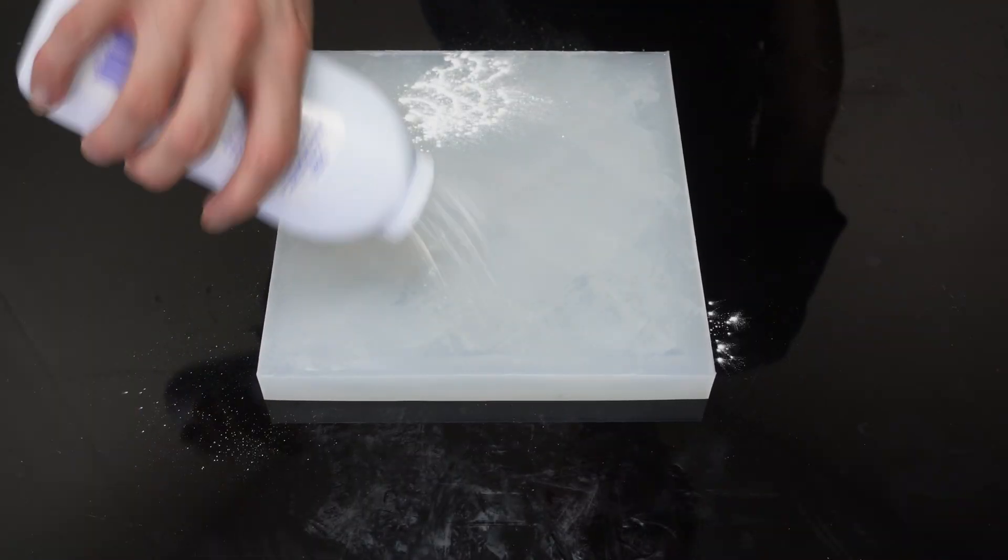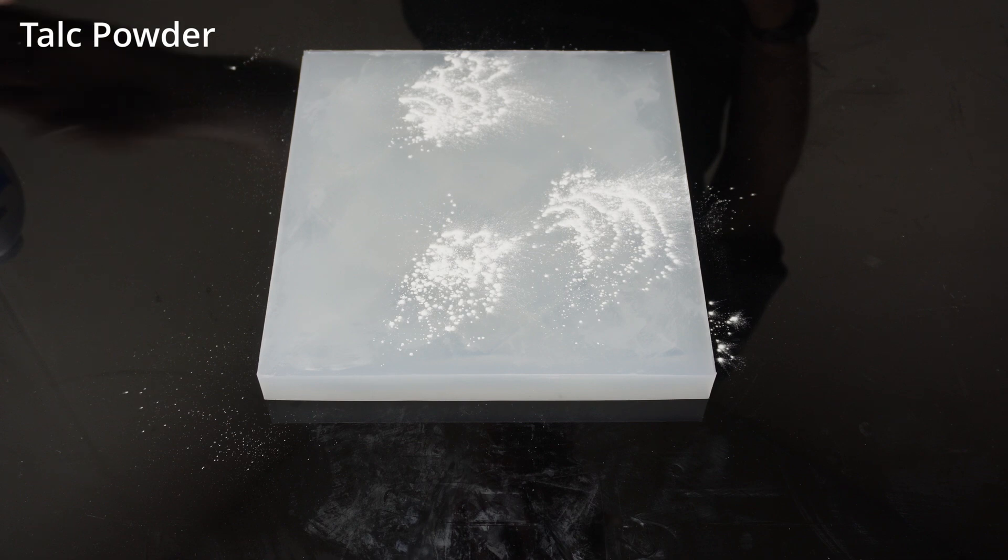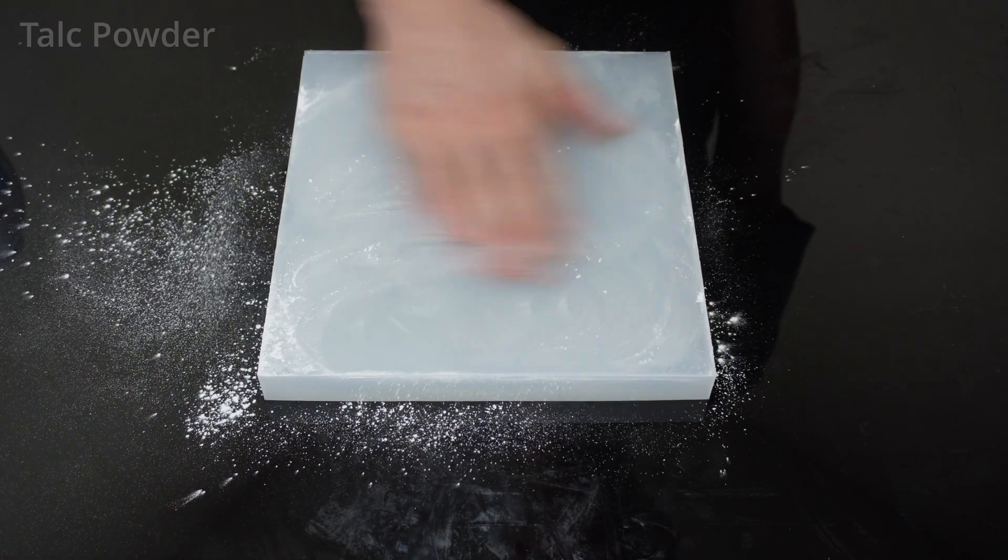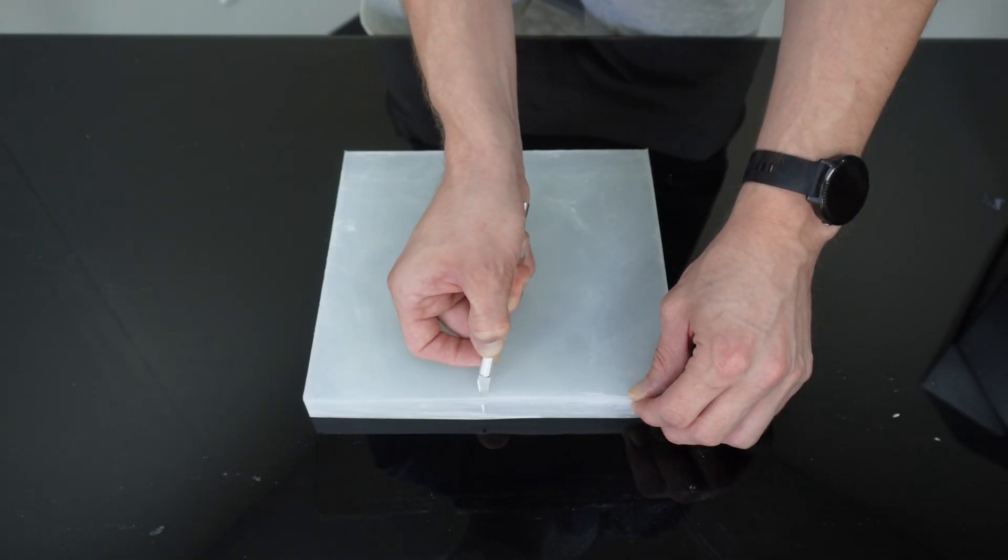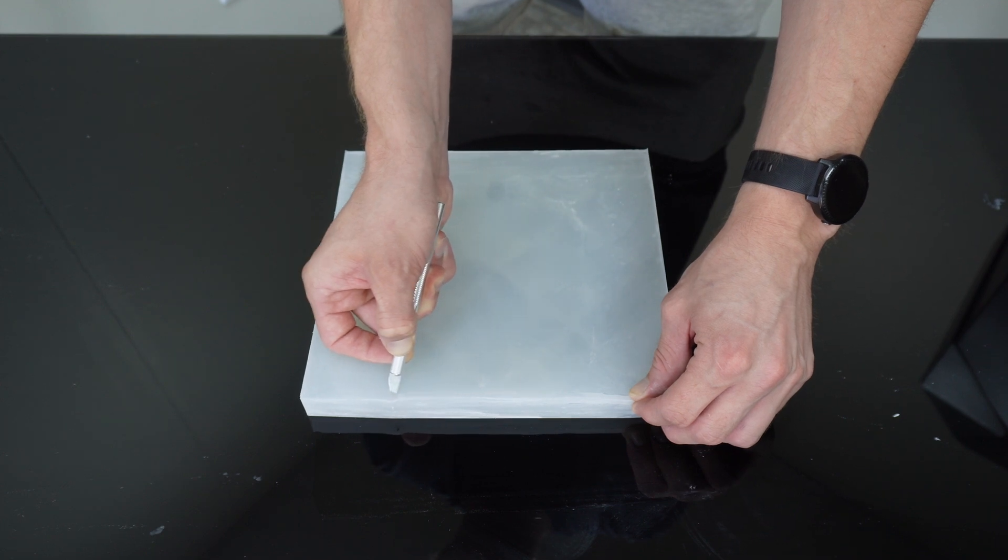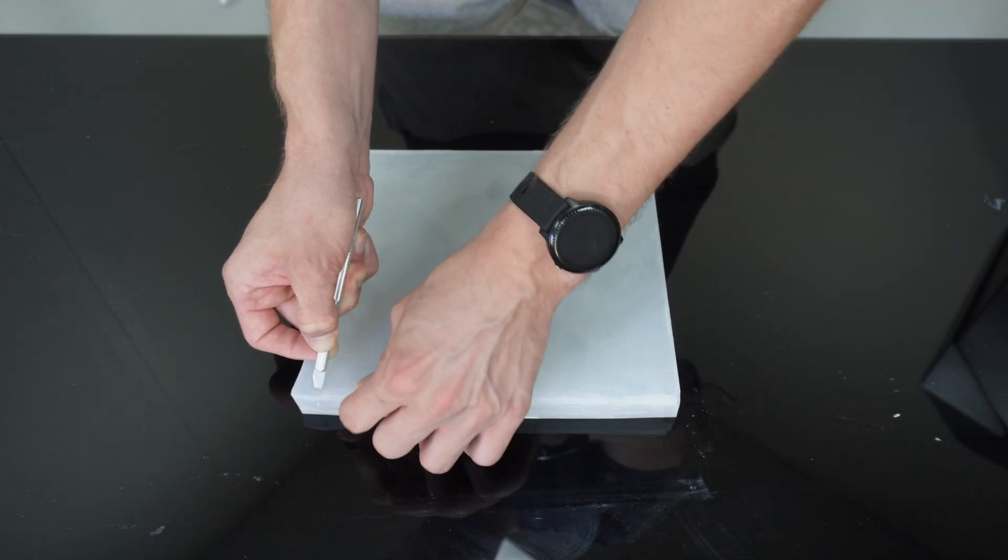After our mold is set, I add talc powder to make the silicone easier to handle and less likely to pick up dust and dirt. Cutting down the edges on the underside of the mold ensures the mold is flat to the surface of our table so each injection is completely level.